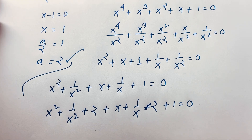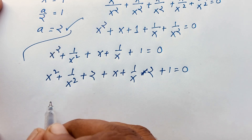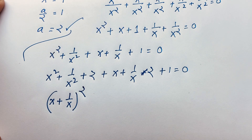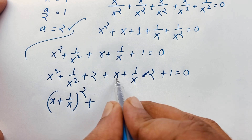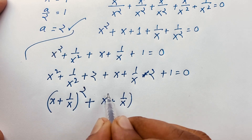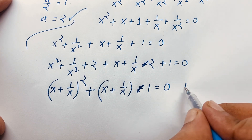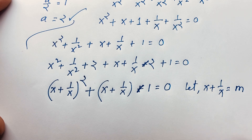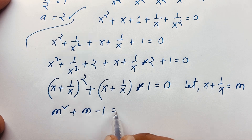We add and subtract 2 to handle the x² + 1/x² term. Since (x + 1/x)² equals x² + 2 + 1/x², we can write x² + 1/x² equals (x + 1/x)² minus 2. Substituting, the expression becomes (x + 1/x)² minus 2 + (x + 1/x) + 1 equals 0, which simplifies to (x + 1/x)² + (x + 1/x) minus 1 equals 0. Let m equal x plus 1 over x, so m² + m minus 1 equals 0.